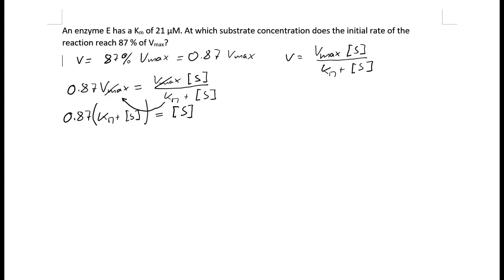Now we factorize this term into the bracket and we get 0.87 times Km plus 0.87 times S equals S.